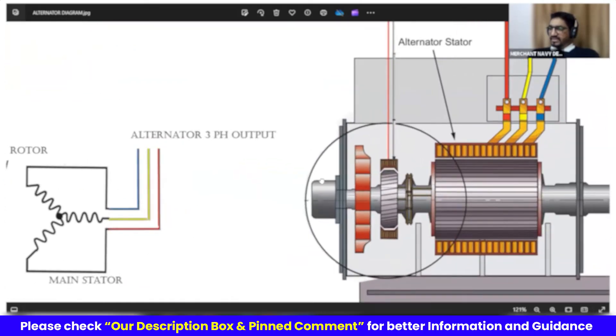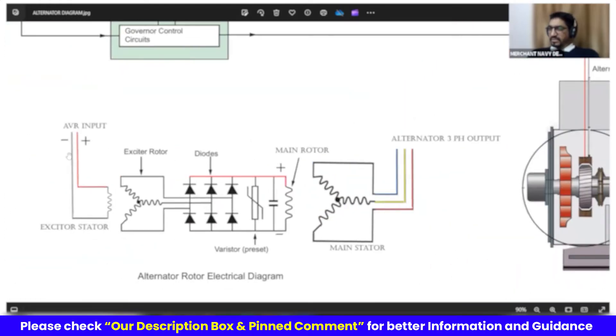This exciter stator is represented here. You get this plus and minus AVR input to the exciter stator. So this is now a magnet. And three coils are - this is a rotor part. This whole section is a rotor. This whole section is nothing but rotor. This is an exciter part of the rotor. This is the main part. And this is exciter stator, exciter rotor. And this is main stator, main rotor.